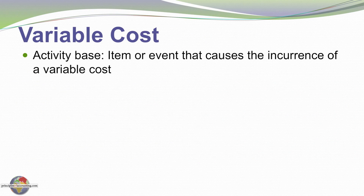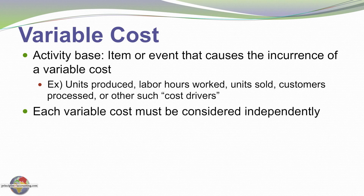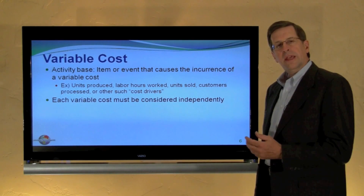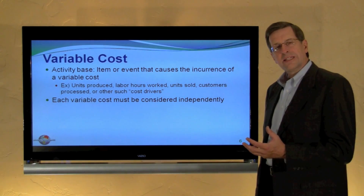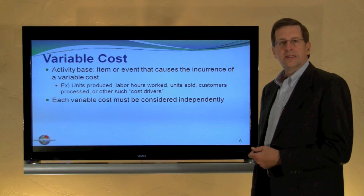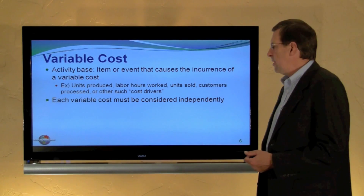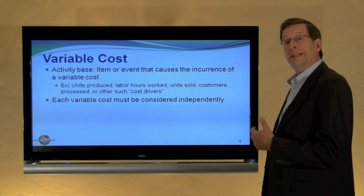Variable cost needs to be associated with the activity base — that is, the item or event that causes the incurrence of a variable cost, the best example being units produced. Each unit produced requires one more chip. Each variable cost needs to be considered independently; a business's variable costs will not all vary in the same fashion. Some may vary with production, some with sales, and some on some other activity base. We have to associate each variable cost with its activity base.